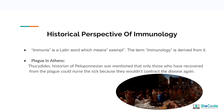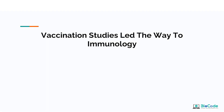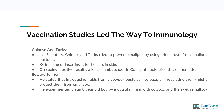Vaccination studies led the way to immunology. In the 15th century, the Chinese and Turks tried to prevent smallpox by using dried crust from smallpox pustules — either by inhaling them or inserting them into cuts in the skin. When a British ambassador saw these positive results, she tried the same on her children, which also gave positive results.